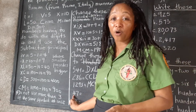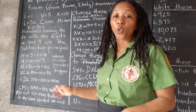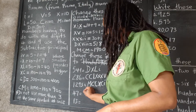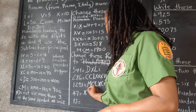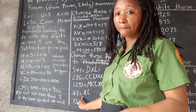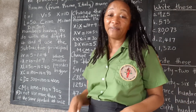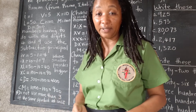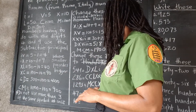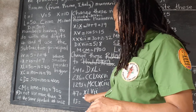Once we see the 4, we know we'll have the subtractive principle. For 47: 40 is 50 take away 10, so we write the 10 first and then the 50 — XL. We don't have a symbol for 7, but we can break it into 5 and two 1s — VII. So 47 is XLVII.